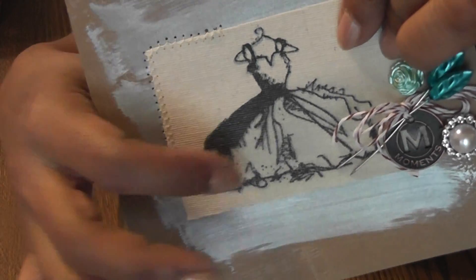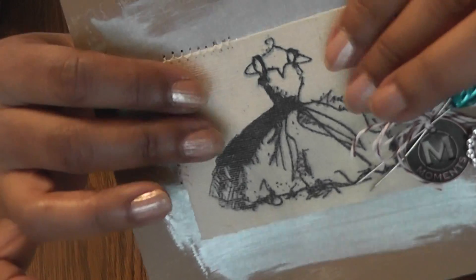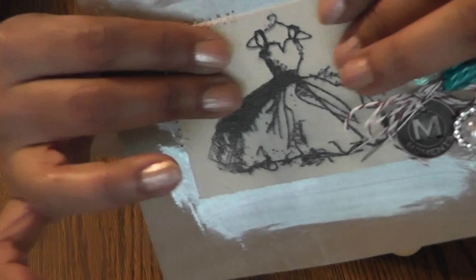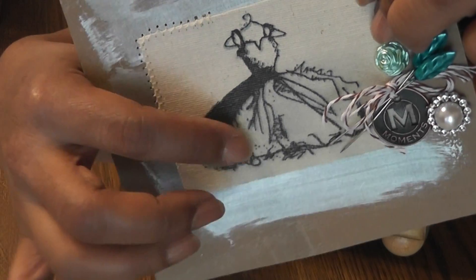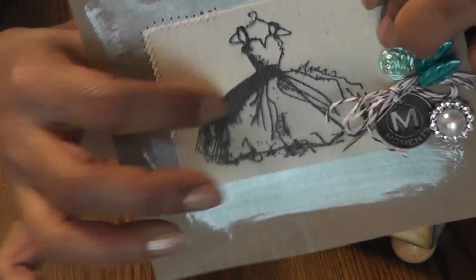Now, I wish I would have masked this stamp and just stamped like a music note in the background first. That would look prettier, but oh well. And then I stamped that pretty dress on there.